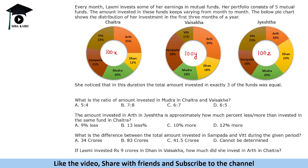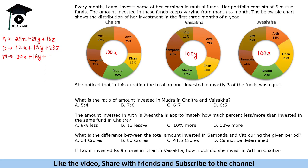The condition given is that the total amount invested across exactly three of the five funds was equal. The fund totals are: Earth = 25x + 29y + 16z; Dhan = 12x + 18y + 23z; Mudra = 20x + 16y + 20z; Sampada = 21x + 26y + 18z; and Width = 22x + 11y + 23z.